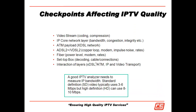Looking at the checkpoints that affect IPTV quality: we have the video stream itself, where codec and compression determine how much bandwidth is generated. Then the IP core network in terms of bandwidth and congestion, the ADSL copper loop itself, the modem, impulse noise, lightning hits, fiber power levels, modem rates, the set-top box and its decoding — and of course the interaction of all these layers.